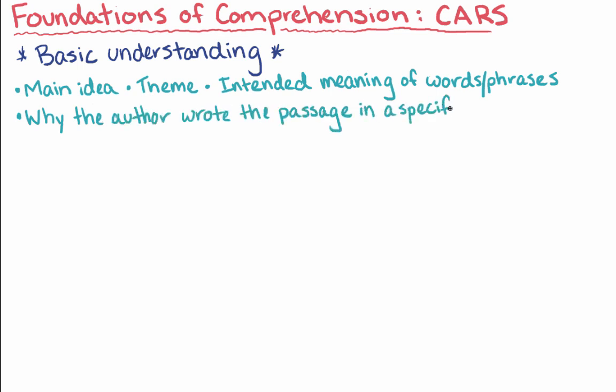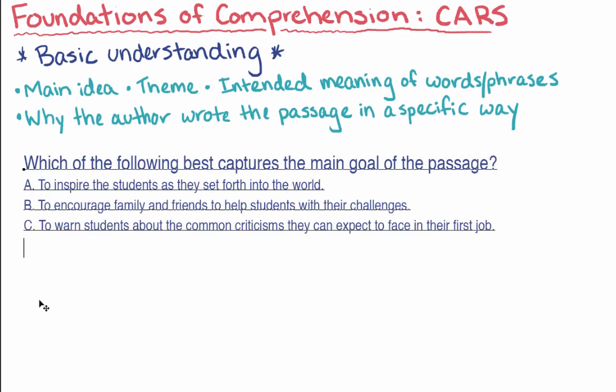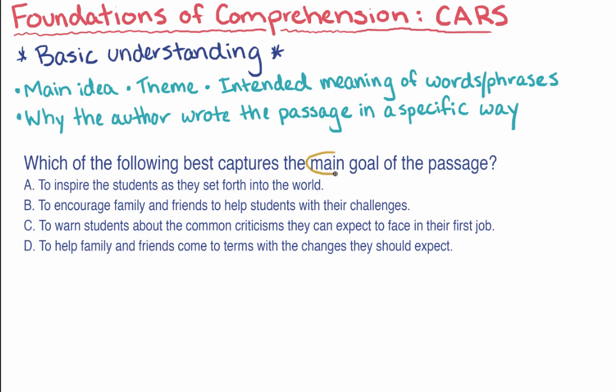Let's start with a quick example of a main idea question. Which of the following best captures the main goal of the passage? First of all, where it says the main goal, we could replace that phrase with the key idea, core theme, or central purpose. All of these are asking about the main idea of the passage. I could also replace passage with final paragraph or third paragraph, and it's still the same type of question. All I want you to notice here is that the question wants you to be able to recognize a good summary or paraphrase of the main idea that the author is saying.